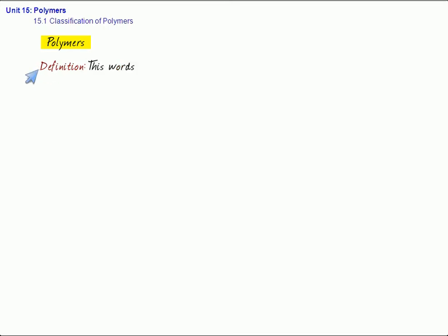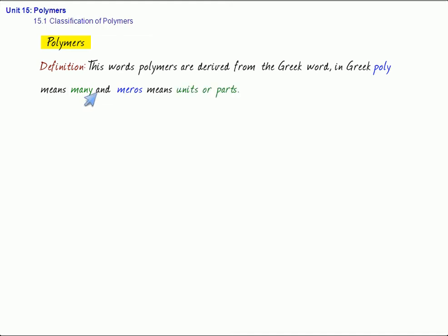Basically, this word polymers are derived from the Greek word. In Greek, poly means many, and meros, M-E-R-O-S, meros, means units or parts.